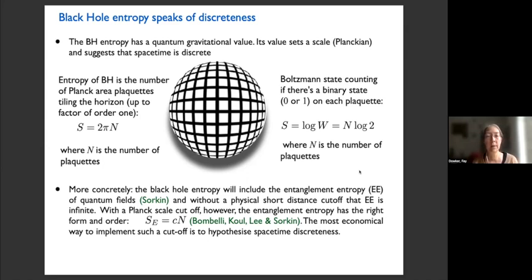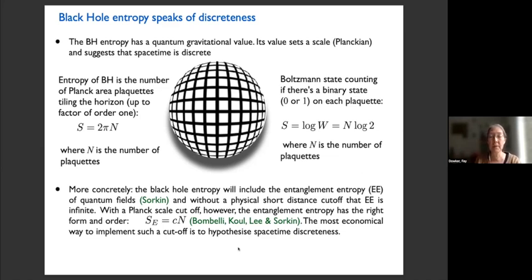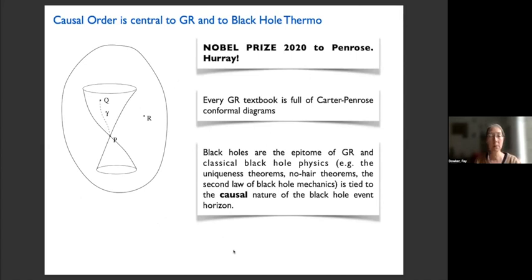The black hole entropy should include the entanglement entropy of quantum fields in the background of the black hole, as first stated by Raphael Sorkin. Without a physical short-distance cutoff, that entanglement entropy is formally infinite. If you put a cutoff in, the entanglement entropy has the right form — it's proportional to the area — and it has the right order of magnitude if that cutoff is the Planck scale. The most economical way to implement such a short-distance cutoff is to hypothesize that spacetime is fundamentally discrete. That's a one-page justification for fundamental spacetime discreteness, which is one of the pillars of causal set theory.